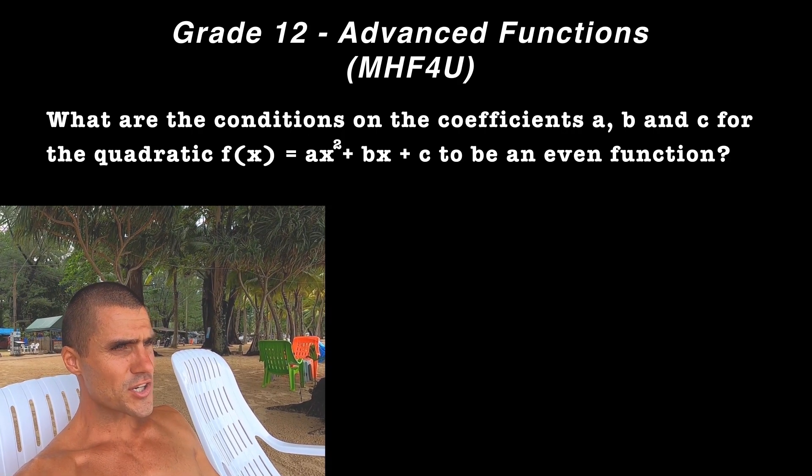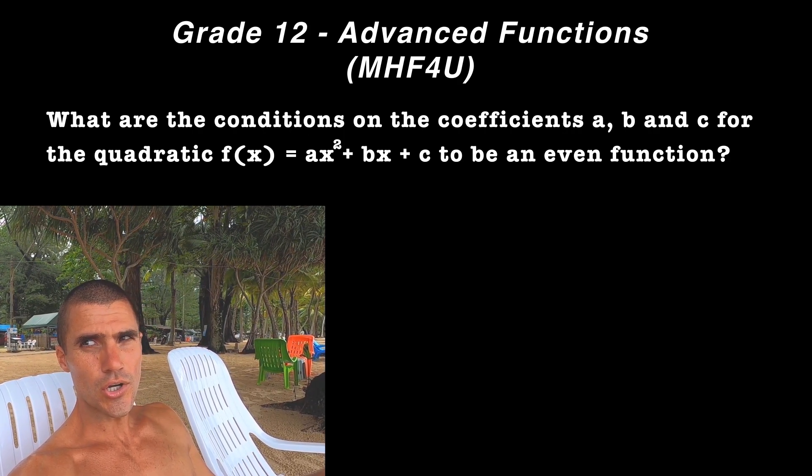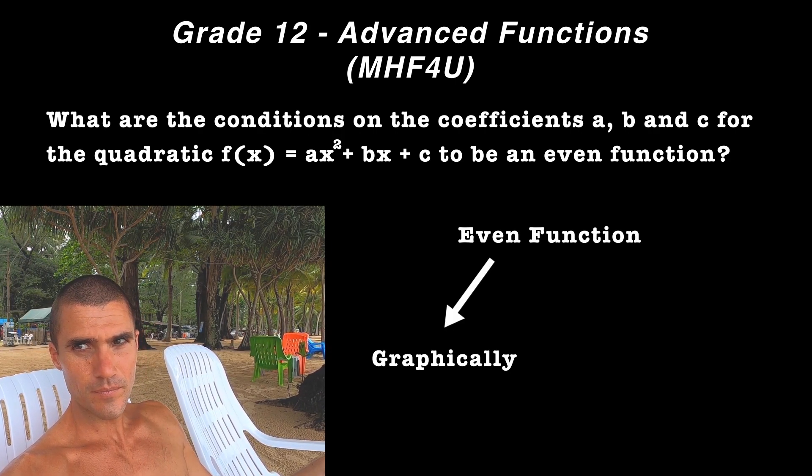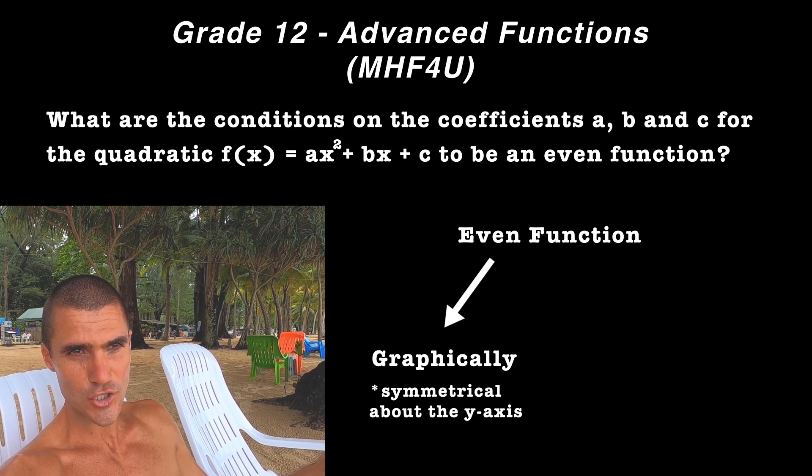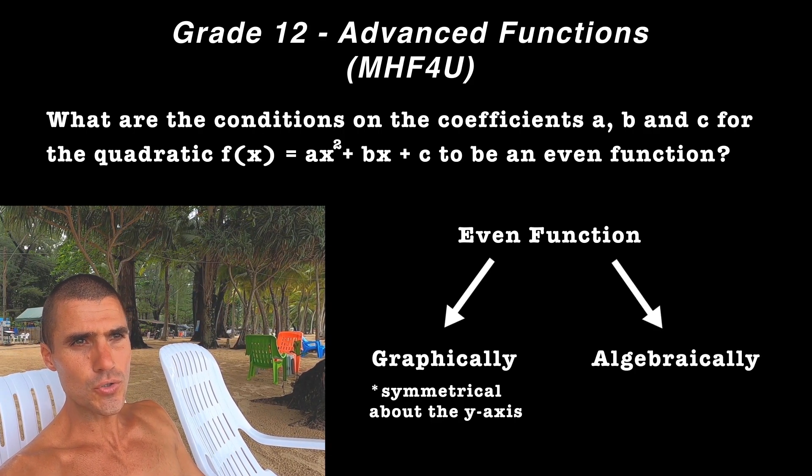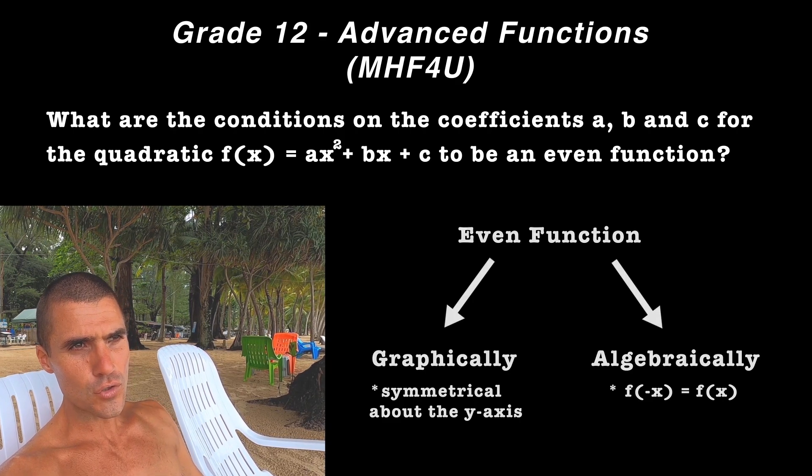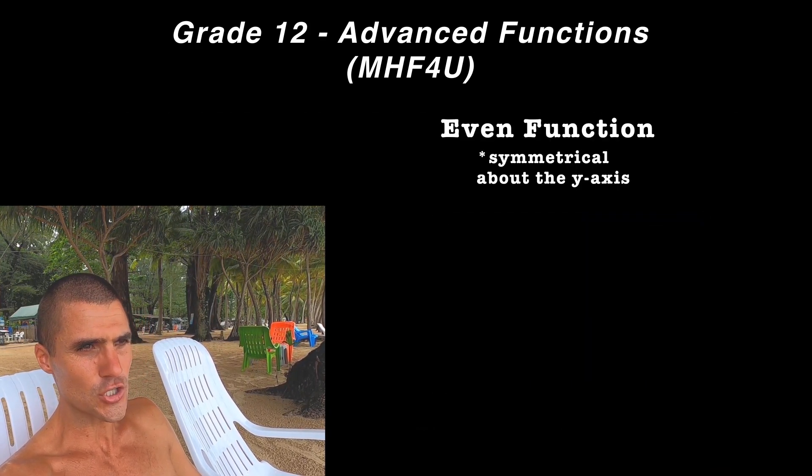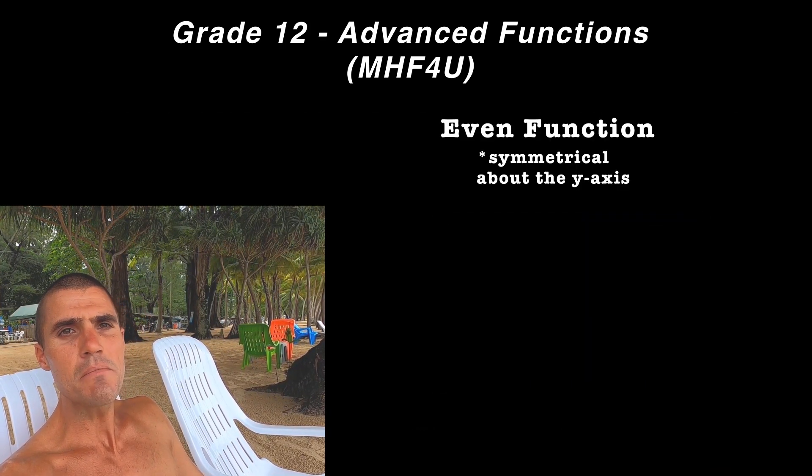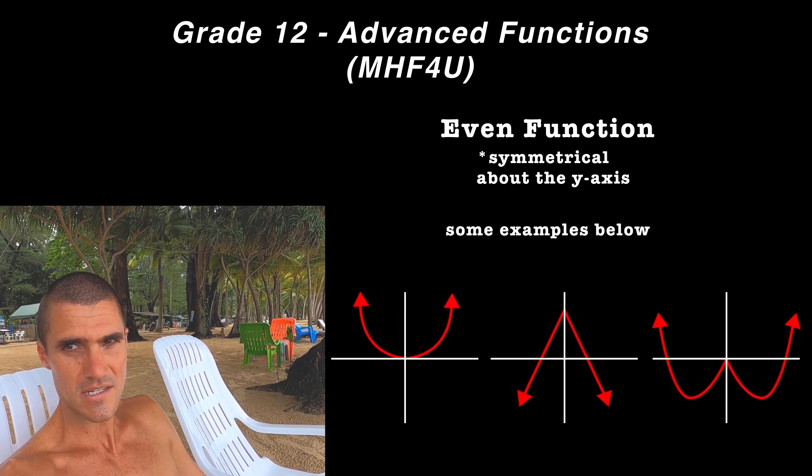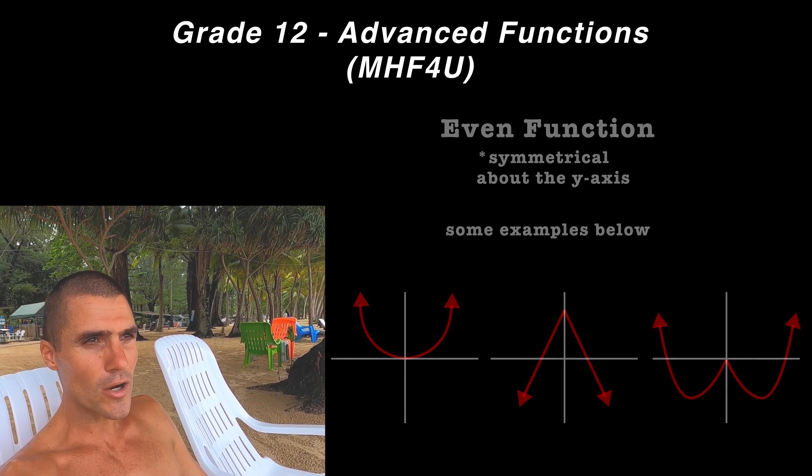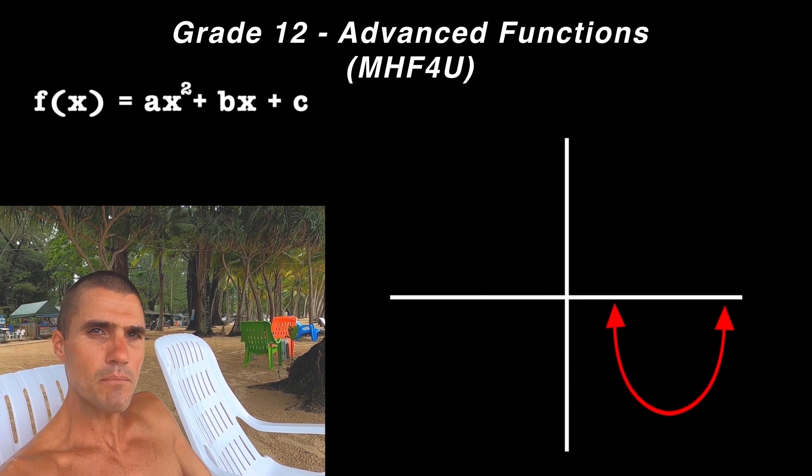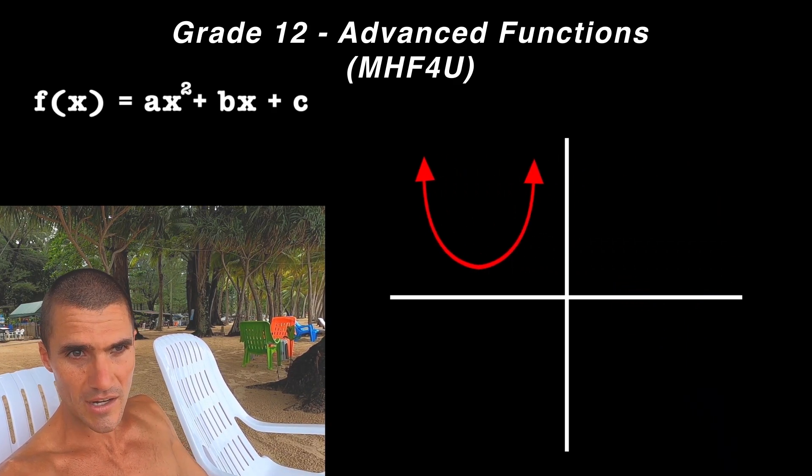So there's a couple of different ways that you can approach this question. We could think about this quadratic graphically and figure out how would this quadratic be an even function graphically, and we could also do it algebraically. Now, if you went through the lecture videos, which I'm assuming you did, we know that an even function graphically is symmetrical about the y-axis. So if we have a quadratic and it's going to be symmetrical about the y-axis, what does that mean about the quadratic?